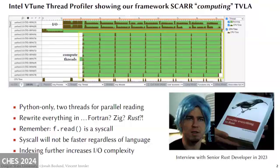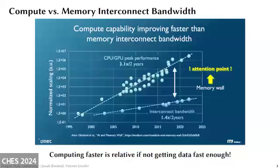So let's talk about what the real underlying problem is here. This graph shows normalized scaling of compute performance and interconnect bandwidth speeds. As you can see, compute performance is growing at a much faster rate than bandwidth speed. This is due to CPUs and GPUs getting performance increases from adding cores, which doesn't benefit memory speed much. This creates a gap known as the memory wall, and the consequence is that computing faster is now relative if you're not getting your data fast enough.